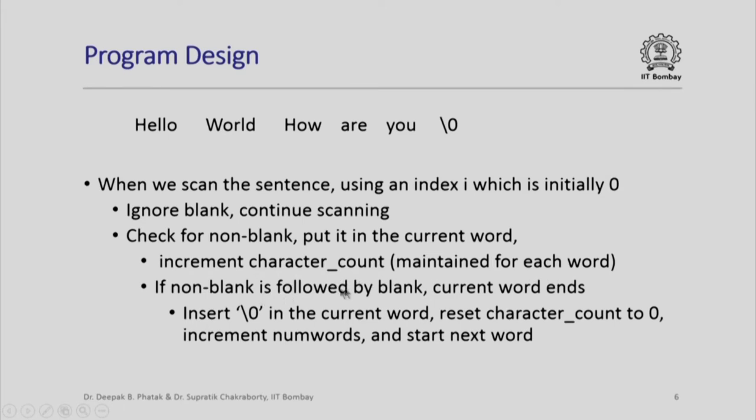If a non-blank character is followed by a blank, observe here, O is followed by this blank. Current word ends, hello as index. When that happens, we will insert a backslash 0 in the current word. Reset character count to 0, because for the next word, we have to start counting characters again. We will increment the number of words, which is stored in a variable num words and we start the next word. Notice that num words can also be used as an index for the row of the two-dimensional array world, because that represents the number of words.